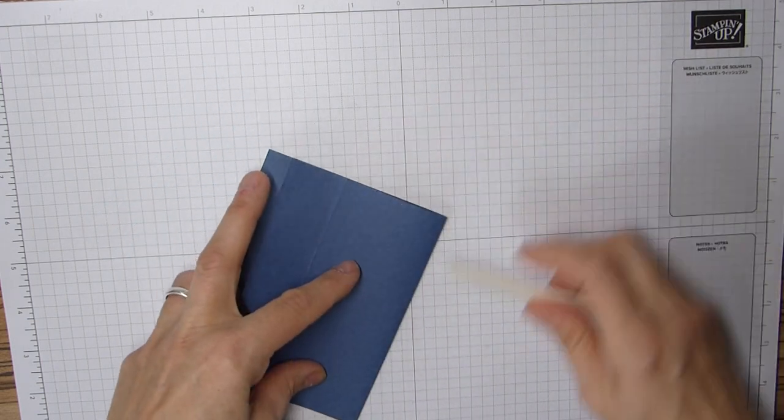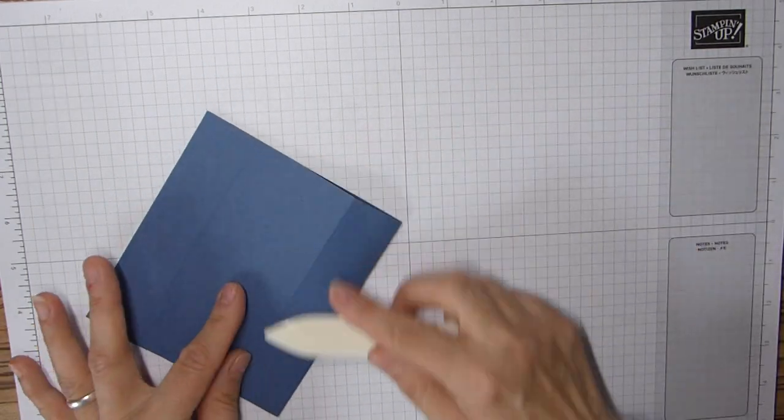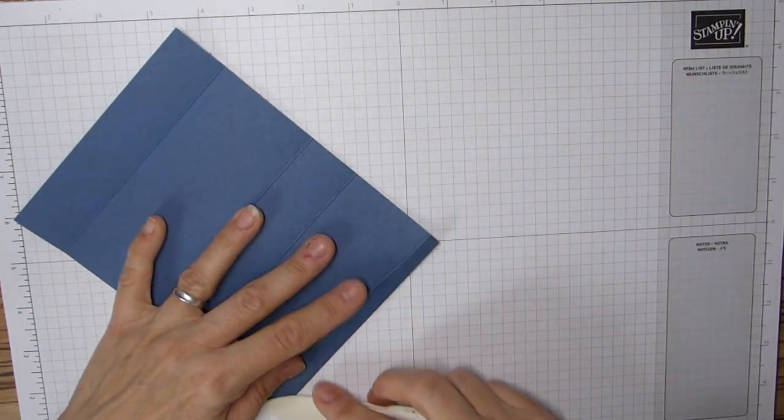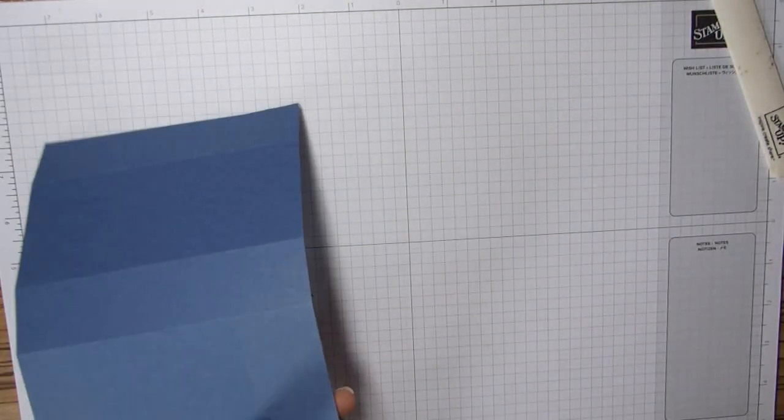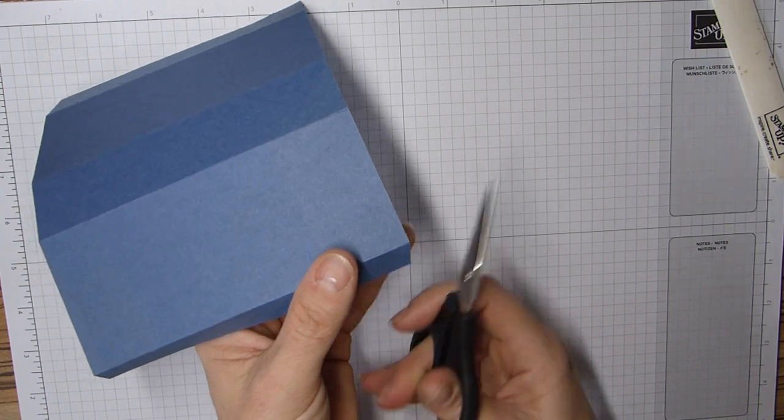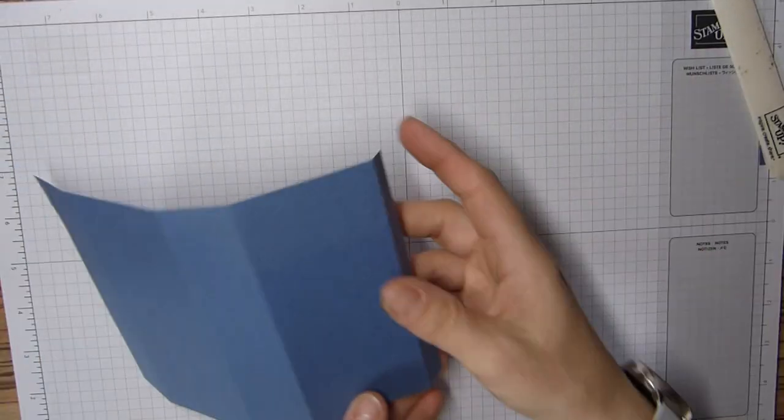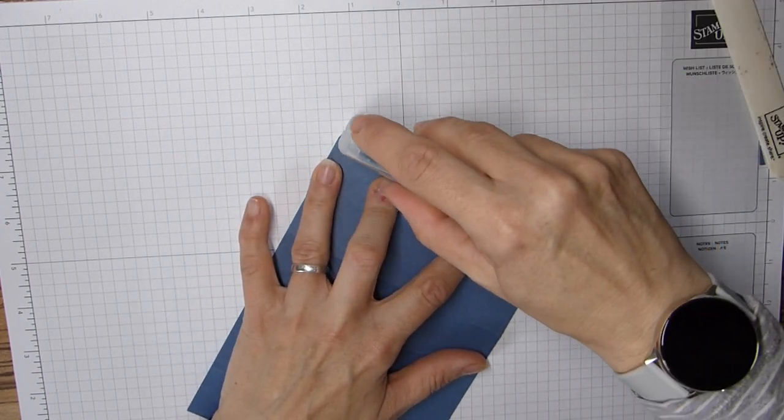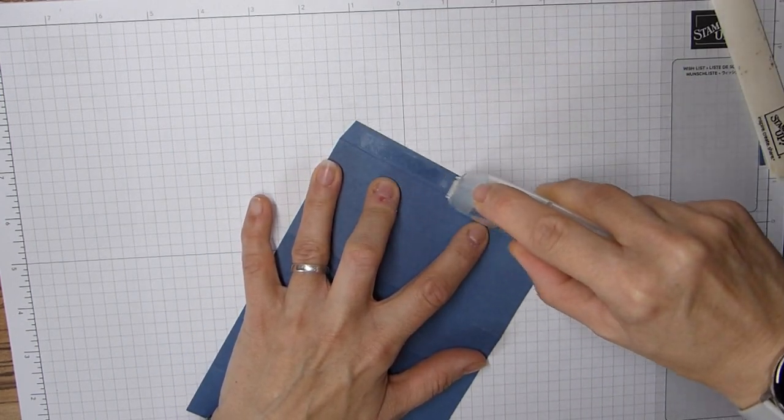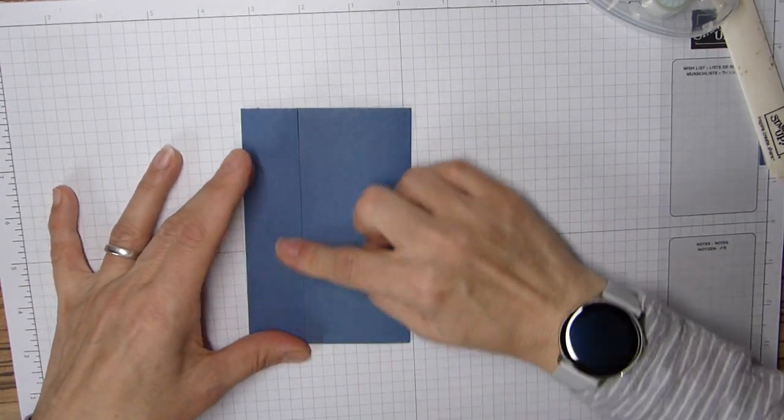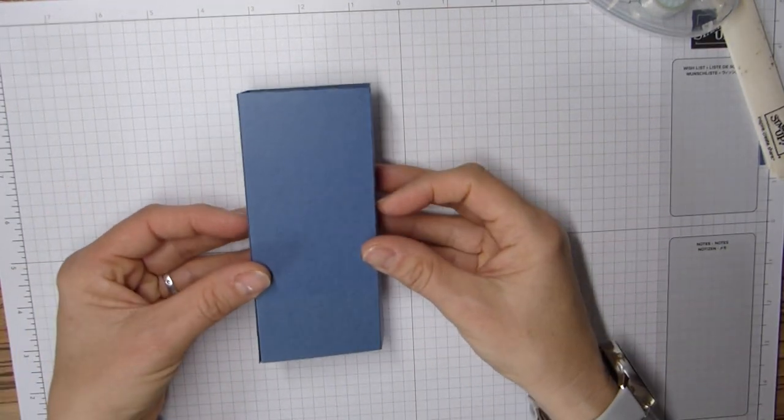Then we're just going to fold and burnish those score lines. And then if you want to, you don't have to, just trim some wedges off that corner. Again add some adhesive, fold it over, and that's that part simple.